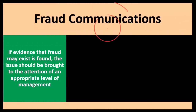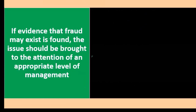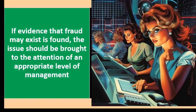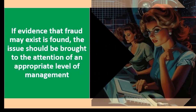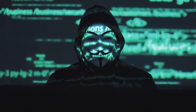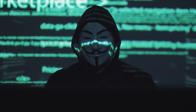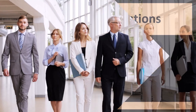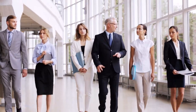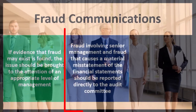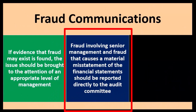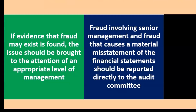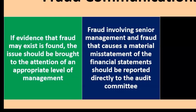If evidence that fraud may exist is found, it should be brought to the attention of the appropriate level of management. Most of the time, fraud is committed by a lower-level employee seeking some personal benefit, such as theft. In that case, we report it to the appropriate level of management, who can then take corrective action — possibly involving legal counsel — and we continue toward our main focus: reporting on the financial statements. However, fraud involving senior management or fraud that causes a material misstatement of the financial statements should be reported directly to the audit committee.